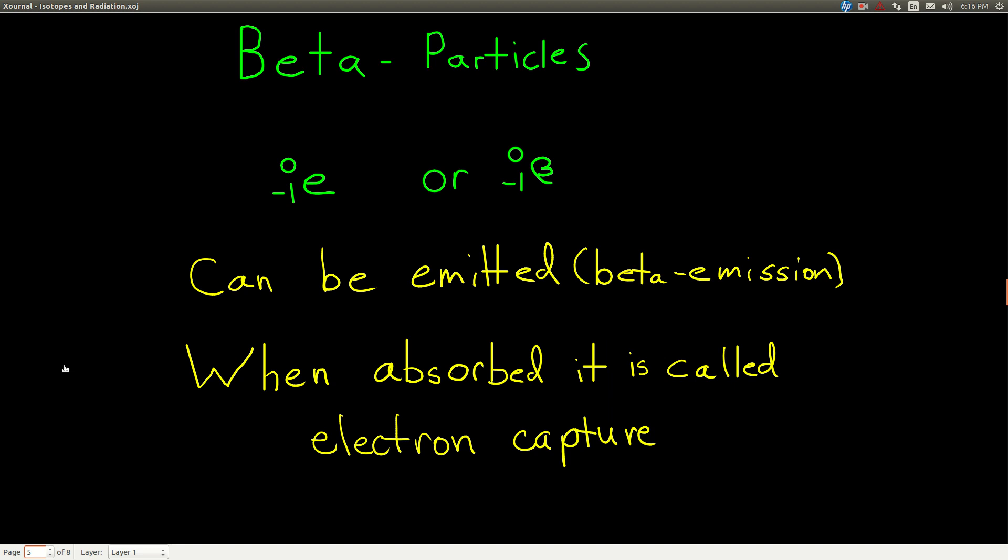So a beta particle, the symbol that we're going to use is either an E with 0 and a negative 1 to the left, or a beta with 0 and negative 1. And beta particles can be emitted (that's called beta emission) and absorbed or captured (we call that electron capture). So the nucleus can either give off a beta particle or it can absorb an electron.